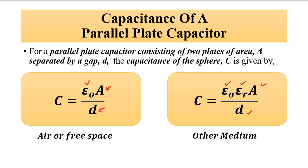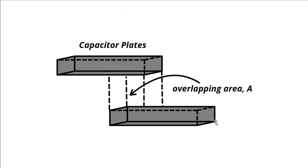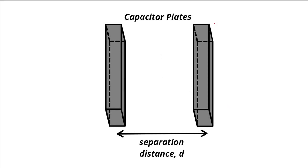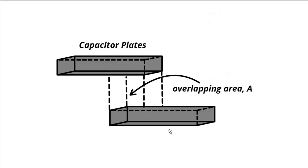For displacement measurement, the two most commonly used parameters are separation distance and overlapping area. One capacitor plate is movable and connected to the object whose displacement is to be measured. When the object moves, the movable plate moves, causing the separation distance to either increase or decrease, producing a change in capacitance. Alternatively, when the overlapping area is used, movement of the object either increases or decreases the overlapping area, also causing a change in capacitance.